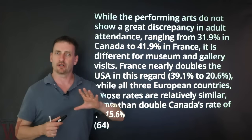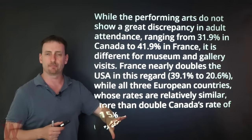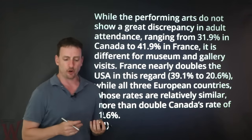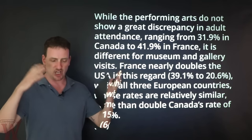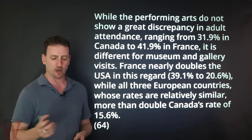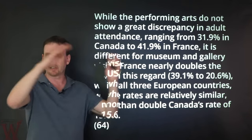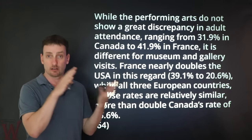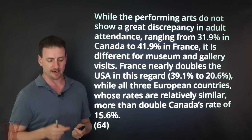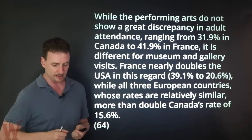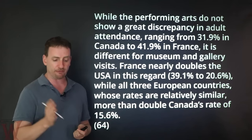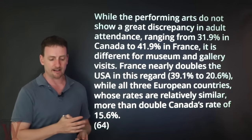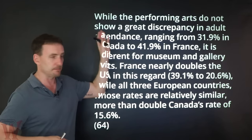So how did I mention I was going to do this? I'm going with a similarity and then a big difference. And my next paragraph: similarity and big difference — make sure you have some sort of consistency. 'While the performing arts do not show a great discrepancy in adult attendance, ranging from 31.9 in Canada to 41.9 in France, which means I'm including all five countries, it is different from museum and gallery visits.' I'm shifting to the difference now. 'France nearly doubles the USA in this regard — museum and gallery visits — 39.1 to 20.6, while all three European countries, whose rates are relatively similar to each other, more than double Canada's rate of 15.6.' Similarity, difference.